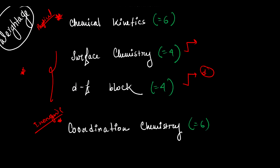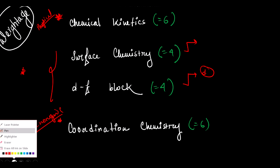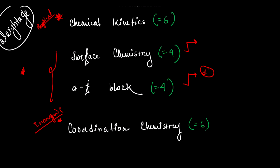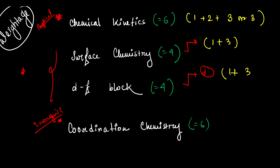To summarize the priority: most important are Chemical Kinetics, Coordination Chemistry, Aldehyde/Ketone/Carboxylic Acid, and Nitrogen Compounds. Moderately important are Surface Chemistry and D&F Block. At the end: Biomolecules and Chemistry in Everyday Life. Now looking at what types of questions come: from Chemical Kinetics, one-mark, two-mark, and three-mark questions all appeared — and the three-mark question had an 'or' option also from Chemical Kinetics, so you can't leave this chapter.